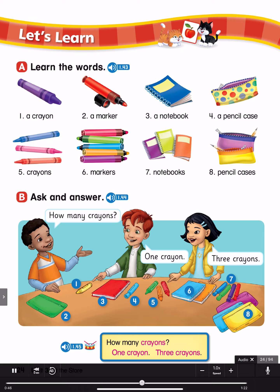One marker. Number 5: How many crayons? Three crayons. Number 6: How many notebooks? Two notebooks. Number 7: How many markers? Four markers. Number 8: How many pencil cases? Three pencil cases. Page 24 Drum Track.